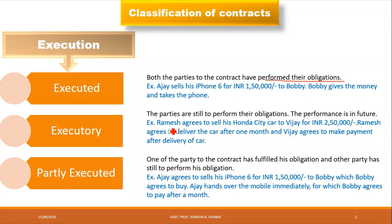An example is given here: Ramesh agrees to sell his Honda City car to Vijay at a price of two lakh fifty thousand. But Ramesh says he will deliver the car one month later.